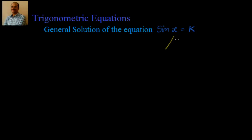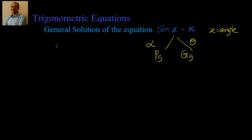For any trigonometric equation, let's take sin x = k. There are two solutions: one is called the principal solution and another is the general solution. Whatever value of x we get, x is a variable angle. Let the principal solution be α and the general solution be θ, meaning sin α = sin θ = k. The principal solution lies in a particular window, but the general solution is also valid — there are infinitely many solutions to a trigonometric equation.